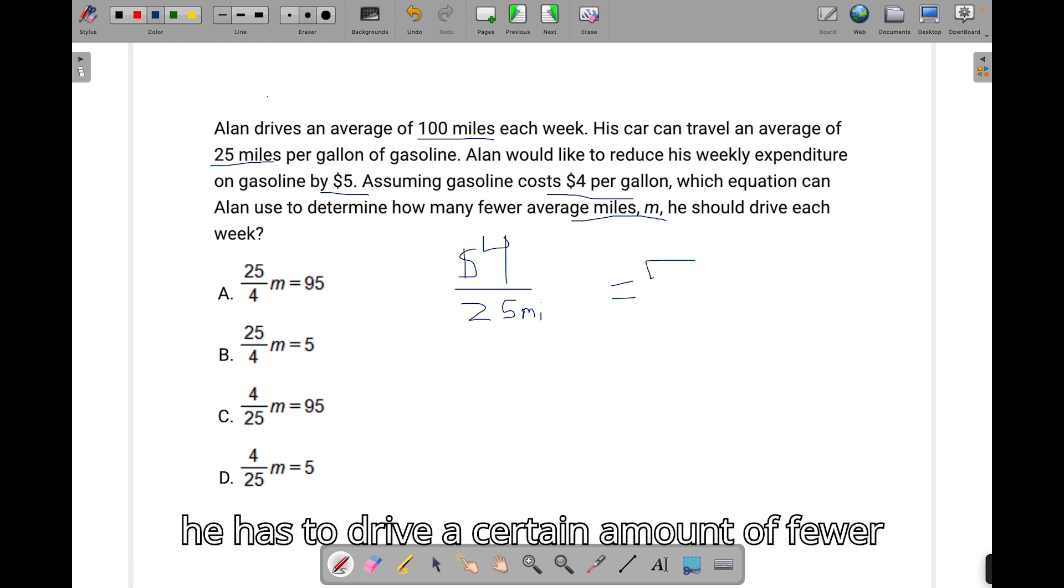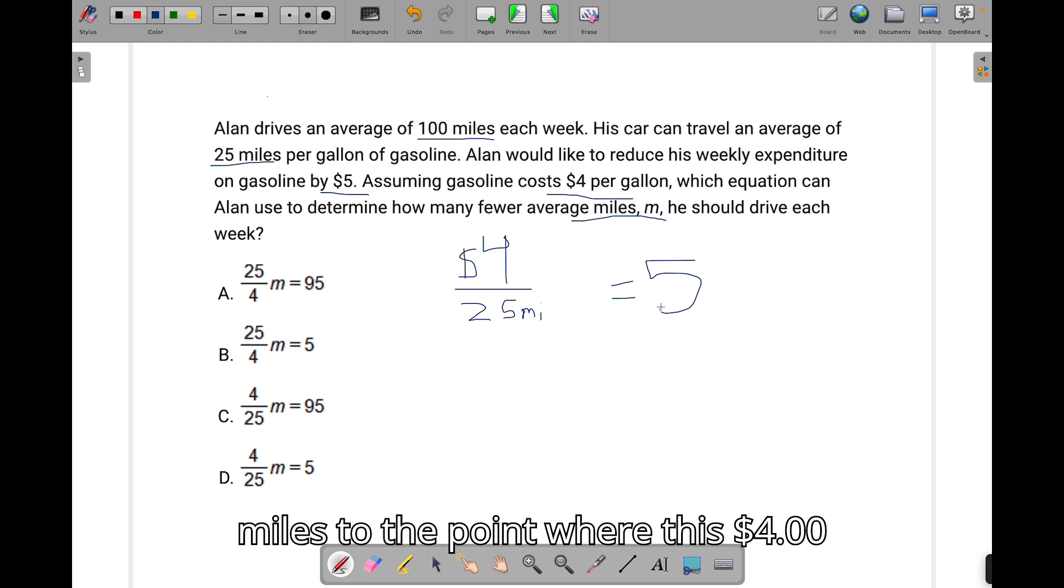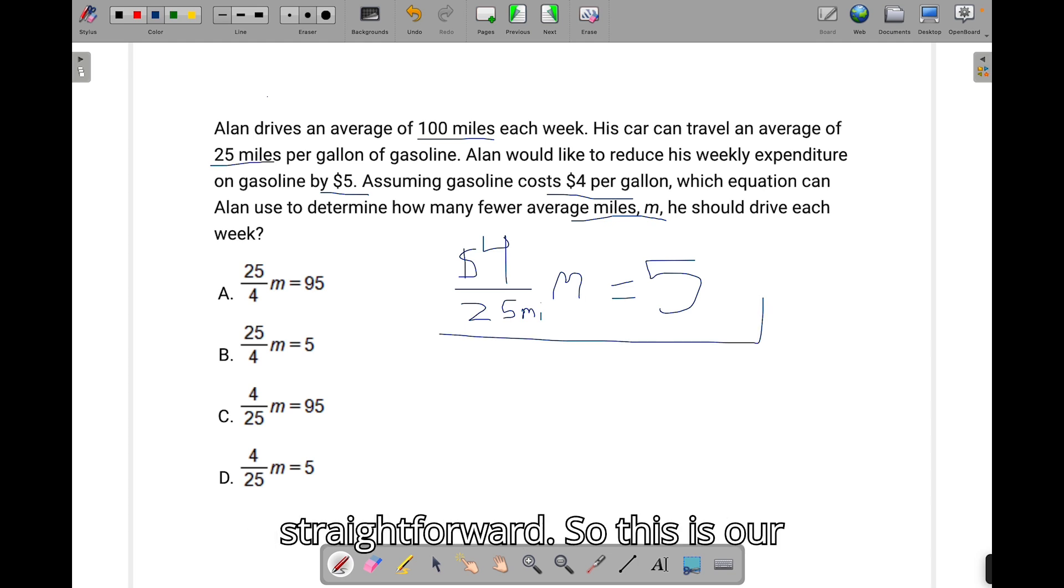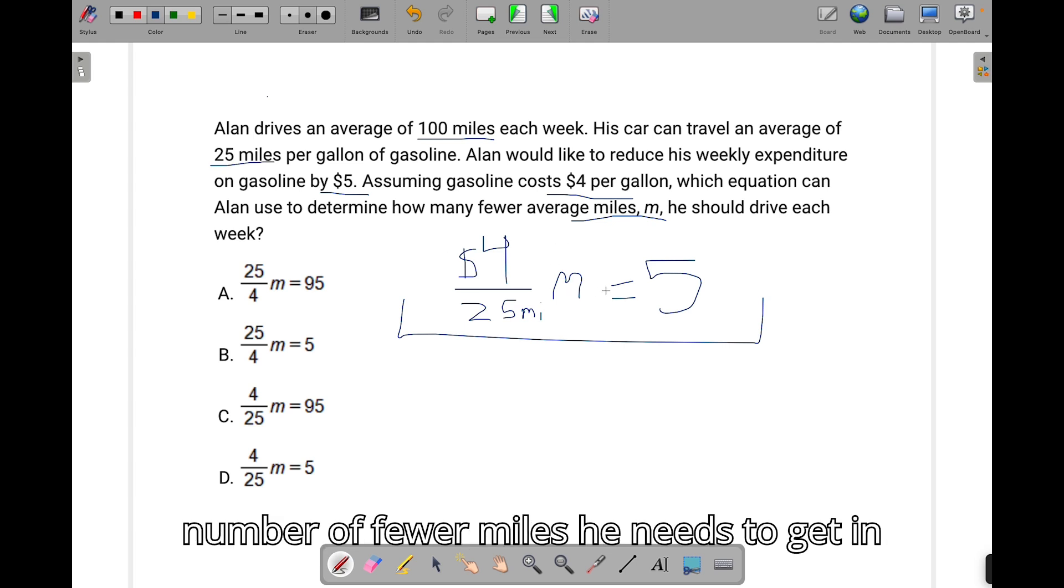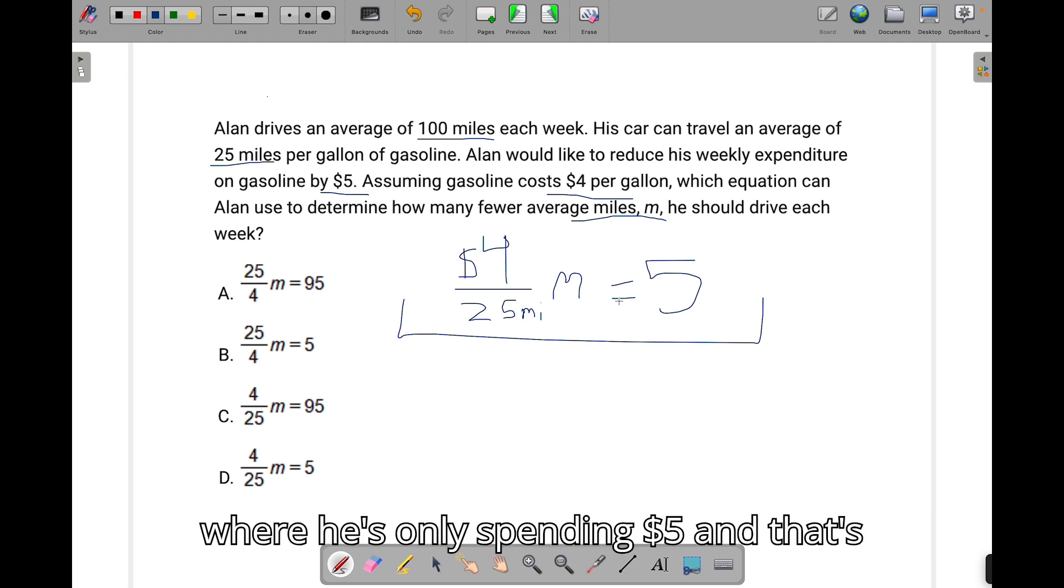So whatever, he has to drive a certain amount of fewer miles to the point where this $4 over 25 miles is equal to that $5. So this number of miles, we're going to write here. And this is all our equation is. It's very straightforward. So this is our slope right here, the 4 over 25. This m is the number of fewer miles he needs to get in order to reach that so-called y value, where he's only spending $5.